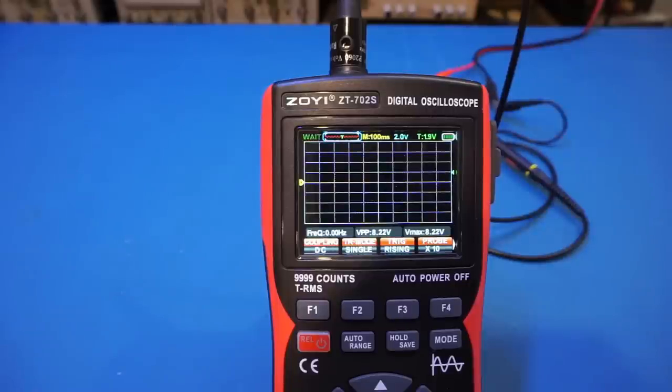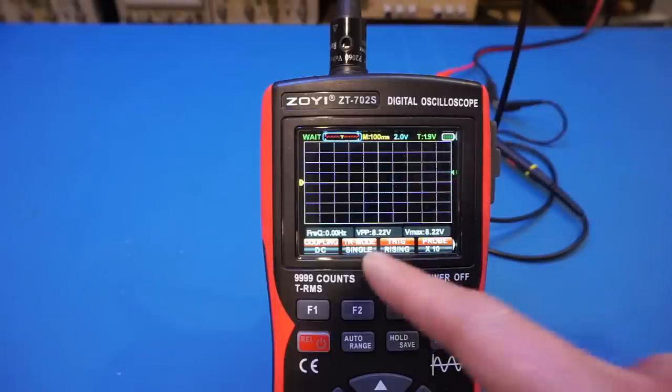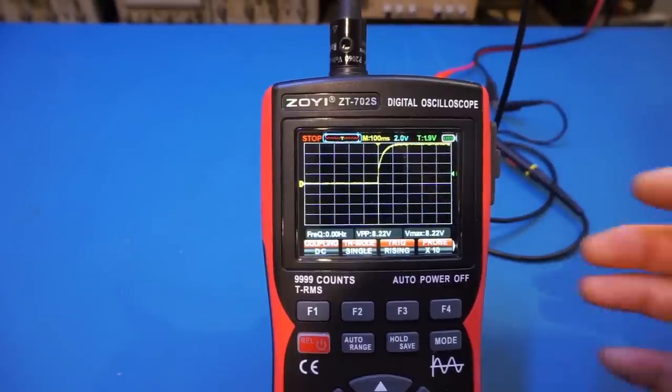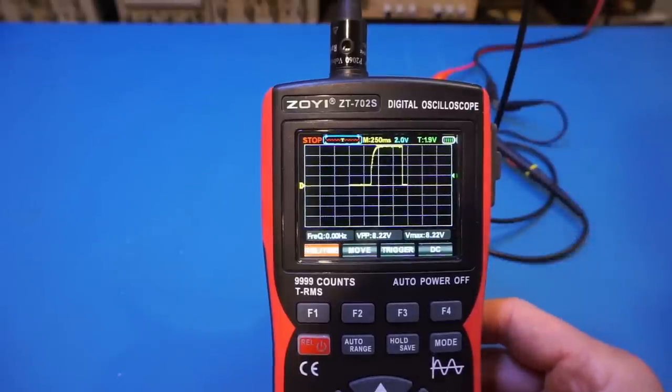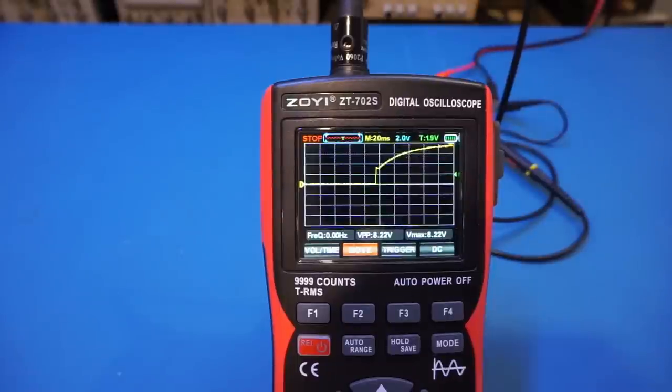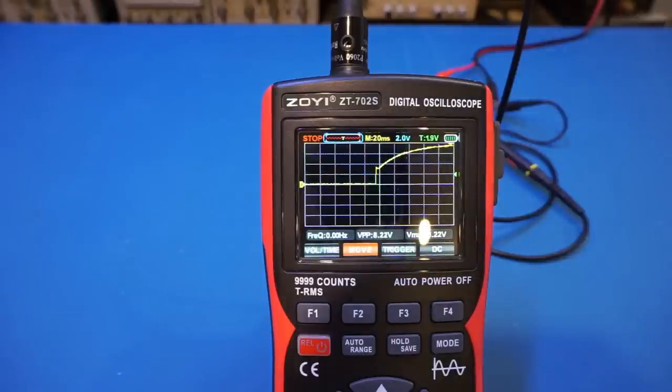Now let's take a look at the single shot capability of this ZT702S. For that, I'm currently hooking the output from a power supply to the input of the oscilloscope probe. And you can see we set the trigger to be single shot mode and triggering on the rising edge and this DC coupling. So let's give it a go. And you can see we captured that signal beautifully. Currently the horizontal is at 20 milliseconds per division, and we have zoomed in quite a bit. And even though the ZT702S only has 64 kilobytes of sample memory, you can still capture enough details for analyzing transient signals like what we have shown here.